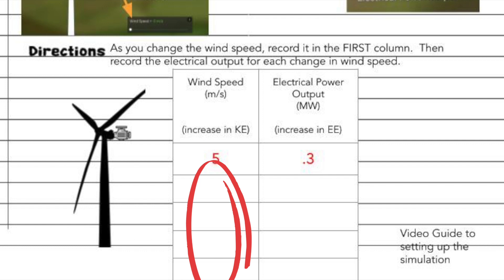Continue that process until you've filled up all of the spots for the wind speed as well as the electrical power output.